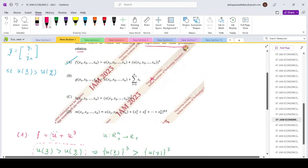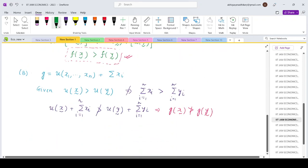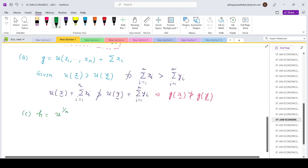Now coming to option C. The H function is U to the power 1 by N. So this is essentially a kind of monotonic transformation. So if U of X is greater than U of Y, if we take two bundles, then if you take 1 by N, Nth power, then that will keep the order unchanged.